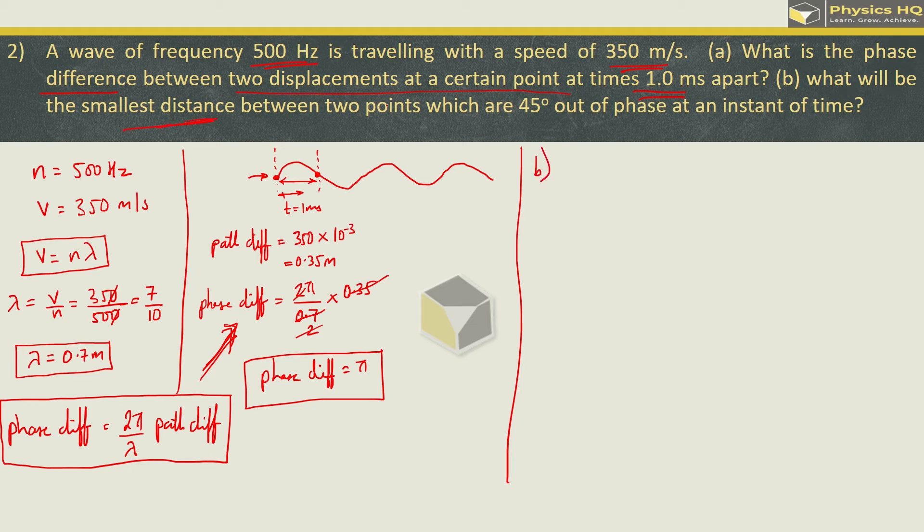Next case, second case. What would be the smallest distance between two points which are 45 degree out of phase? So here you are given phase difference and need to find path difference. So same formula rearranged. Path difference will equal lambda upon 2 pi into phase difference. Lambda we got was 0.7, 2 pi as it is. And phase here given is 45 degree. 45 degree you can write as pi by 4. So this pi and pi cancel. We are left with 0.7 upon 4 into 2 is 8. If you divide, you will get 0.0875 meter.